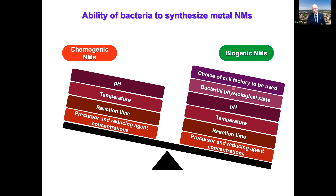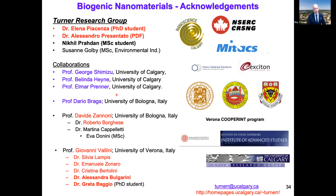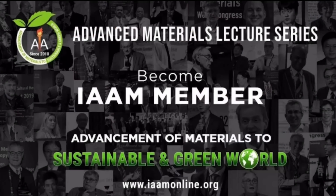We believe we have a good approach to green nanomaterial synthesis. Compared to chemical methods, we have two additional parameters: the bacterial physiological state and the choice of our cell factory. Microbes make up 98% of species on the planet, giving us a huge diversity of possible organisms to produce nanomaterials — we've barely explored a microliter of that bucket. Thank you very much. I want to acknowledge Elena, Alessandro, my new student Nikhil, Roberto — the first postdoc who helped see if we could do this — Greta, Alessandro, and Sylvia Lampas, a collaborator at the University of Verona. It's been a great project.